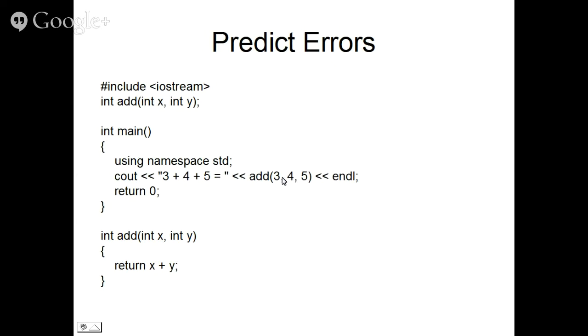So it will try to look out for a match for an add of three parameters integer type, which is not existing. So the compiler will give an error that add(int, int, int) not found. Okay, so that is the error.